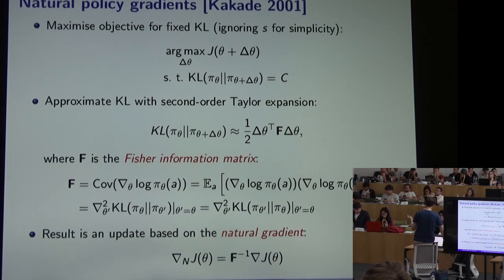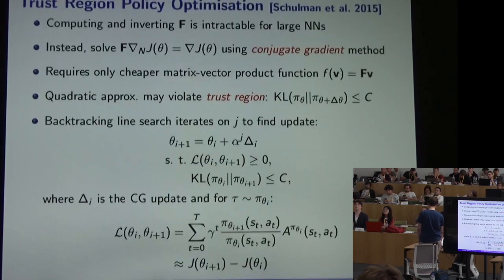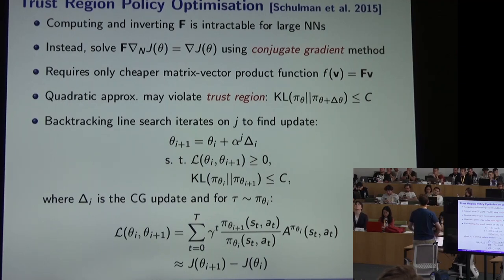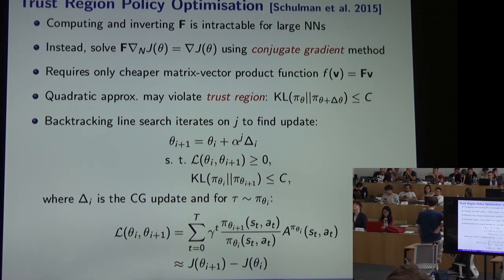This is a nice idea that gives us a way to control the distance traveled in probability space during gradient descent. The difficulty is that computing and inverting the Fisher information matrix is intractable for the problems we care about — networks with thousands or millions of parameters — so natural policy gradients were primarily of theoretical interest.